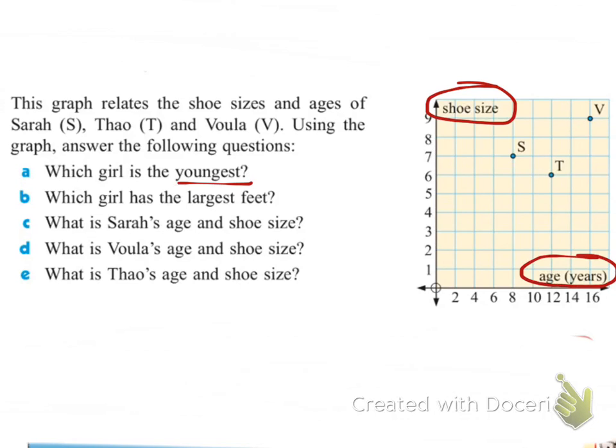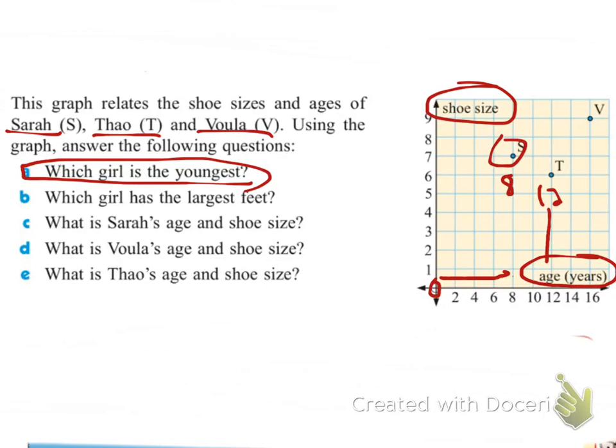And we could start the answer, who is the youngest girl? We're looking at Sarah, Thao, and Voula. And Sarah's youngest, right? Because again, you start at 0, the age is the x-axis, so whichever girl you come to first, Sarah's 8. And it looks like Thao is 12. I'm just lining up the numbers here with the dots. And then Voula is 16. So who's the oldest? Voula's the oldest.